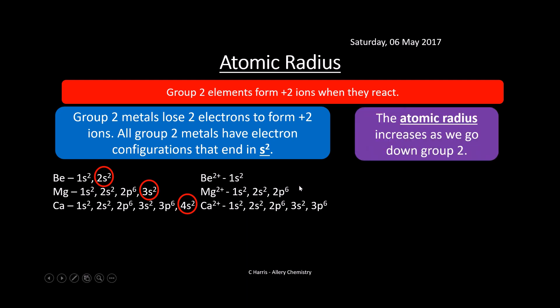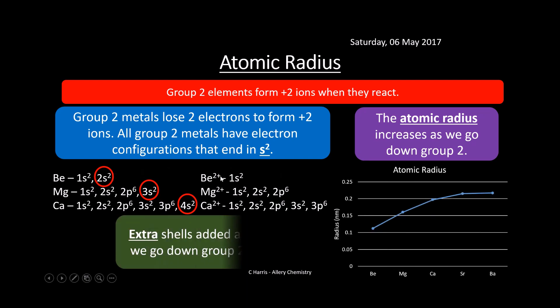The atomic radius increases as we go down the group. That's pretty important because we're adding extra electron shells as we go down, so it's getting bigger and bigger. There's a graph just to prove that - extra shells are added as we go down the group.